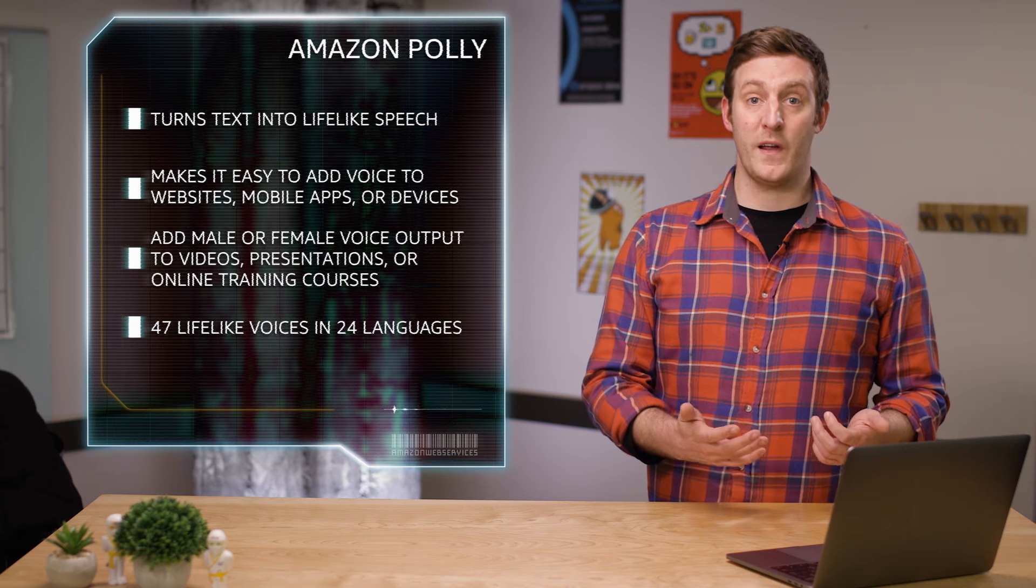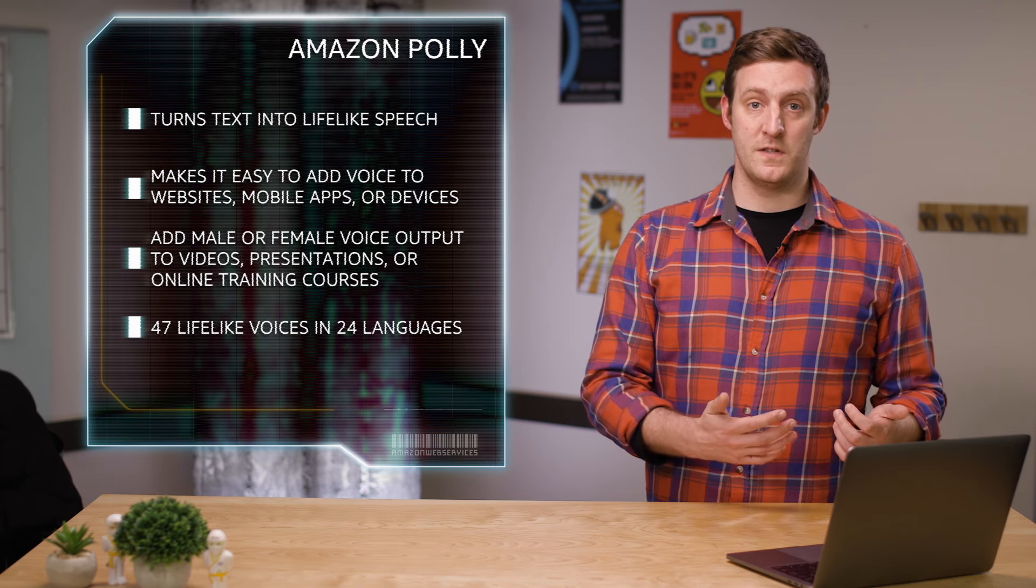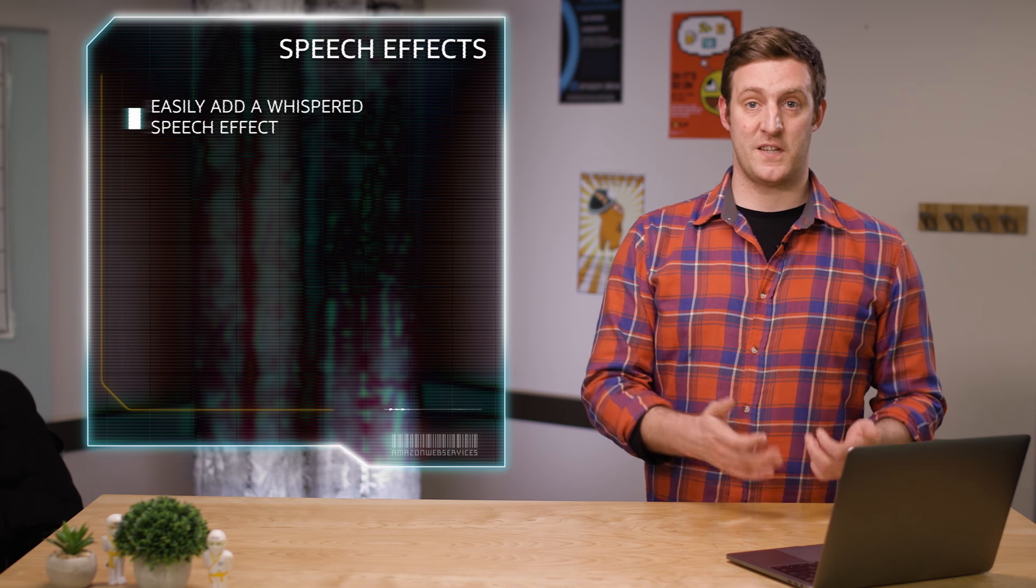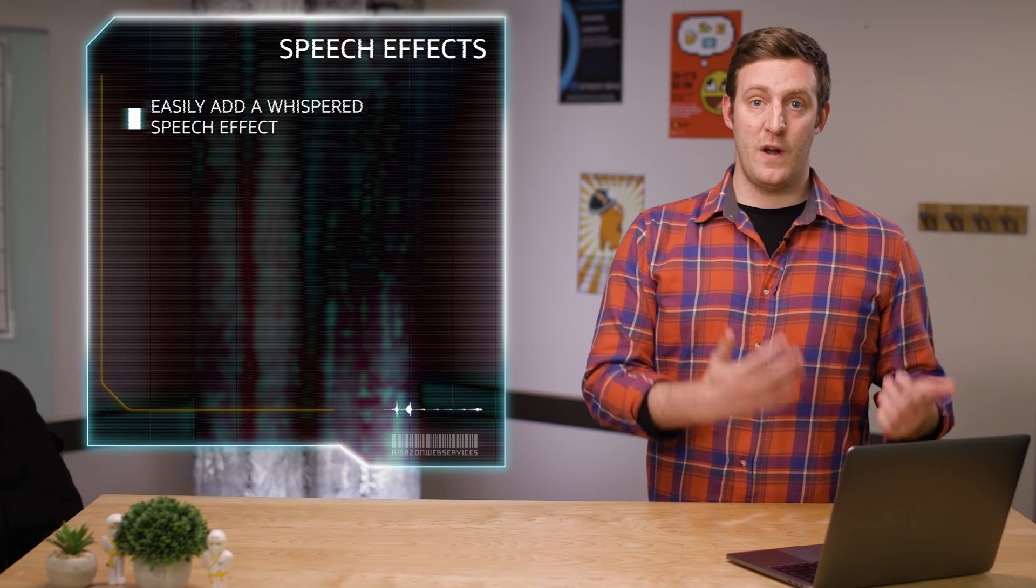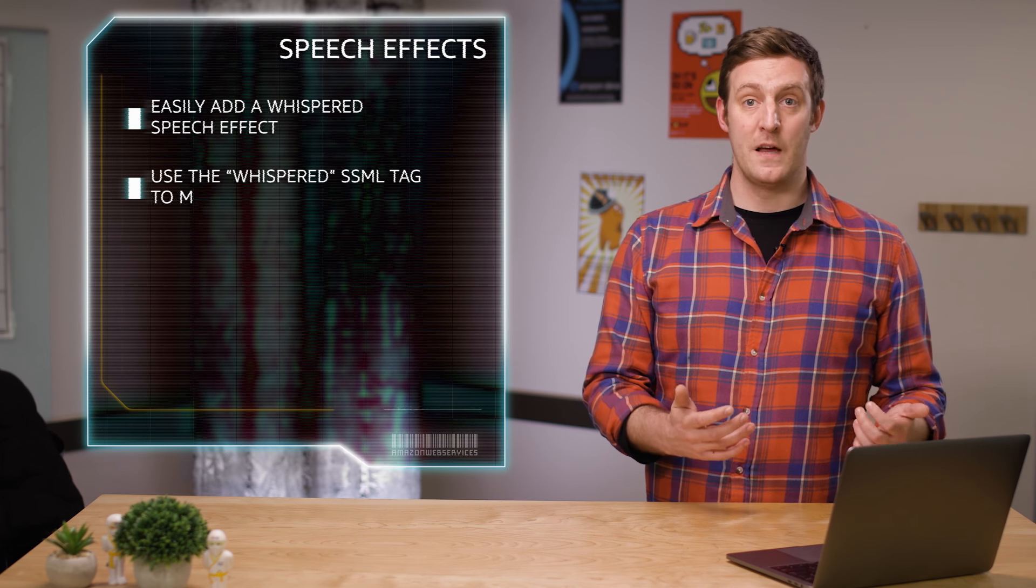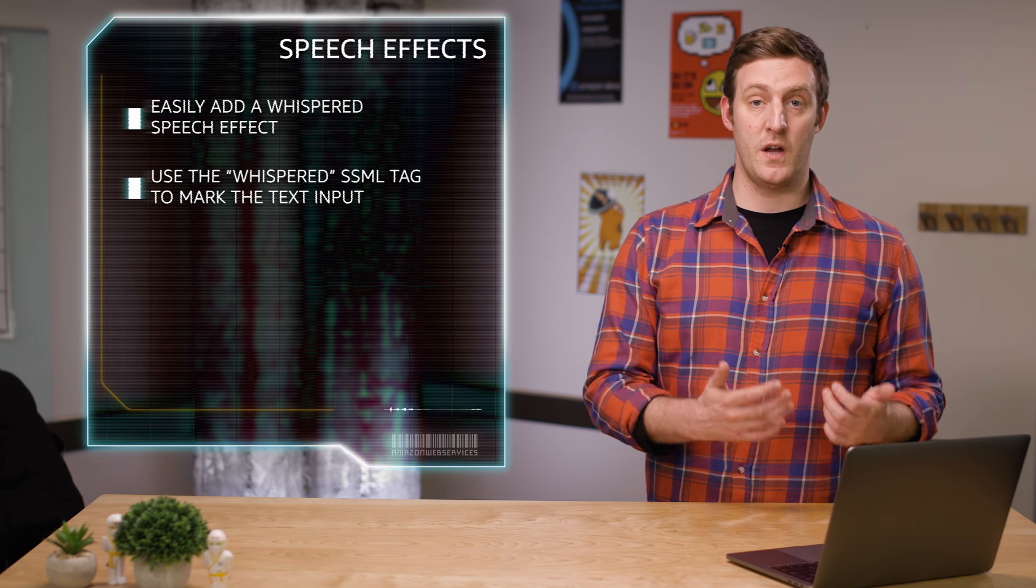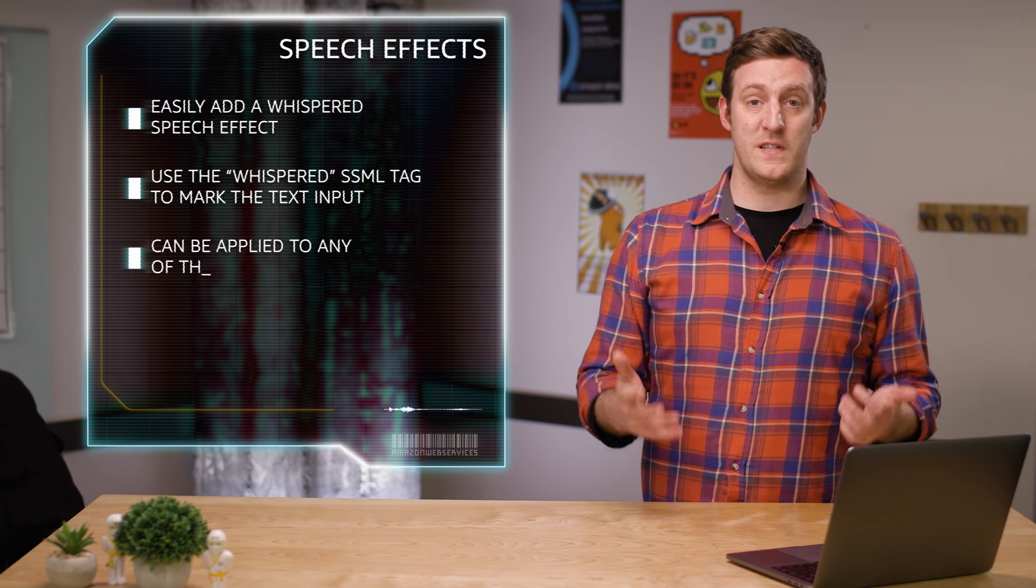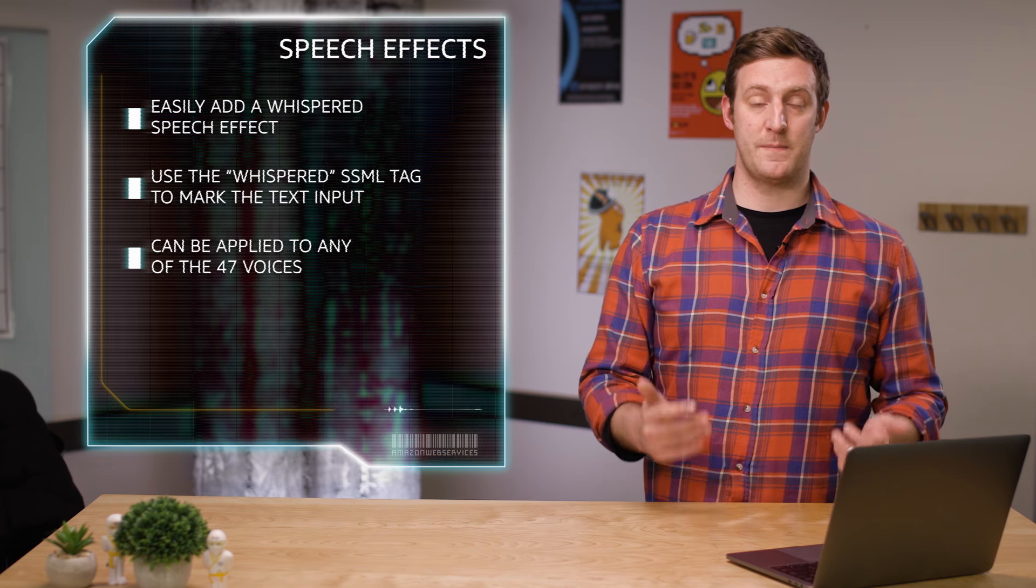To enhance the lifelike experience of using Amazon Polly voices, you can now easily add a whispered speech effect to your text-to-speech output. To create voices that mimic the effect of whispering, you simply use the new whispered SSML tag to mark the text input to be spoken in a hushed voice. This tag can be applied to any of the 47 voices in Polly's text-to-speech portfolio.